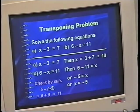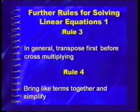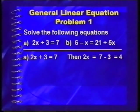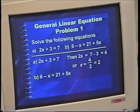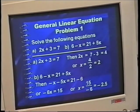When you have to do both cross-multiplication and transposition, transpose first before cross-multiplying, and bring like terms together. For 2X plus 3 equals 7: transpose first to make it 2X equals 4, then cross-multiply to get X equals 2. For 6 minus X equals 21 plus 5X: transpose, putting X terms on one side and numbers on the other, to get negative 6X equals 15. Then divide to get negative 2.5.